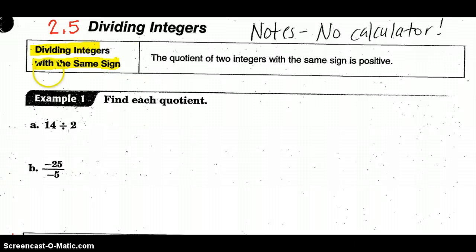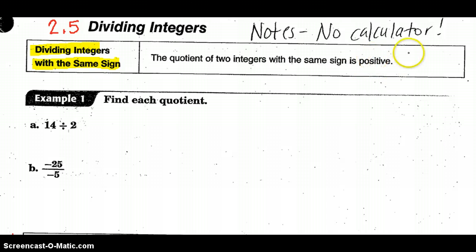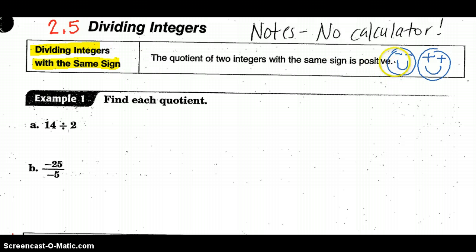Dividing integers with the same sign: the quotient — which is the outcome of division — of two integers with the same sign is positive. That's just like multiplication: if they're the same sign, we're happy, either asleep or wide awake. Division with the same sign turns out to be positive.